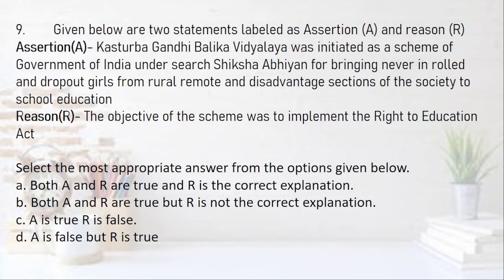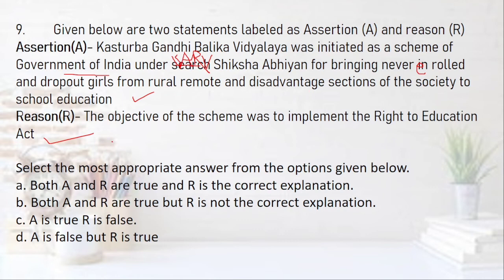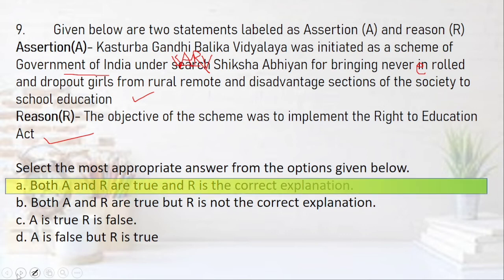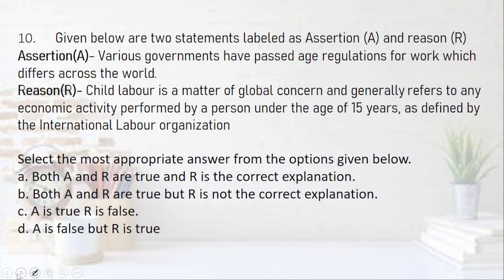Question 9: Assertion — Kasturba Gandhi Balika Vidyalaya (KGBV) was initiated as a scheme of the Government of India under Sarva Shiksha Abhiyan for bringing never-enrolled and dropout girls from rural, remote and disadvantaged sections of society to school education. Reason — The objective of the scheme was to implement RTE. So — bringing in never-enrolled girls from remote and disadvantaged sections, because the objective of the scheme was to implement RTE. We can use 'because' here, so both A and R are true and R is the correct explanation — option A.